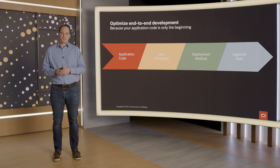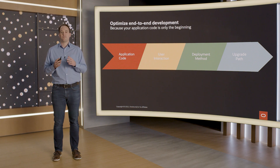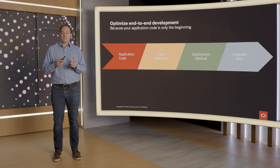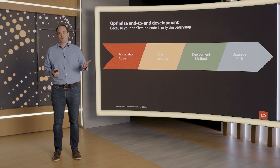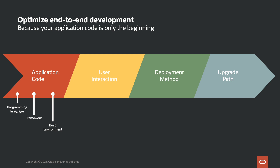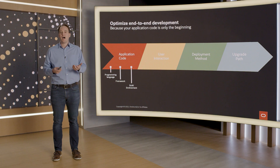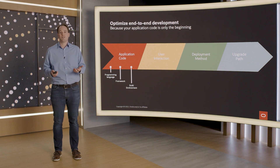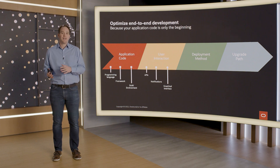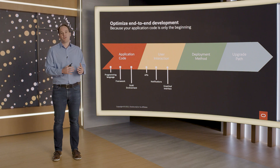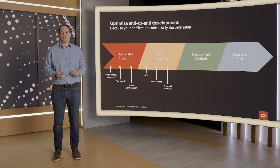Optimizing the end-to-end development process is one of the most important aspects that we, as developers, often miss. Usually we focus a lot on writing the application and getting it to production. But we also need to think about which programming language, which frameworks, and what the build environment looks like. How will the user actually interact with that application? Do we need API calls? How do we document and make them available? Do we send notifications, receive notifications, or do we have a graphical interface? If you miss some of these things, you may have to go back and start over again once you realize that need.